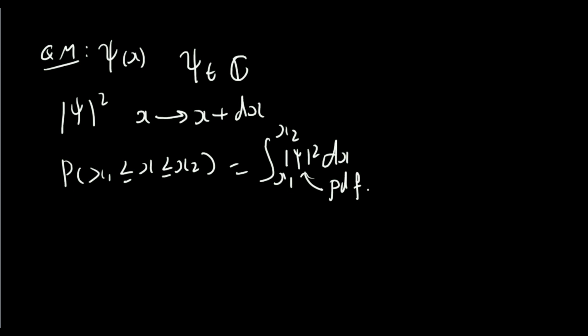Because mod psi squared is a probability density function and a particle must appear somewhere, we know that if we integrate over all space from minus infinity to infinity of mod psi squared, that must be equal to one. This is just saying that the total probability that we find the particle somewhere is equal to one. This is what we call a normalization condition.